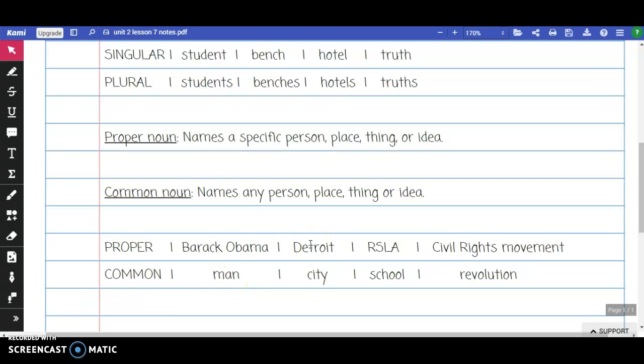Detroit is a proper noun because it is the specific name of a city. The common noun would be city because it could refer to any city.